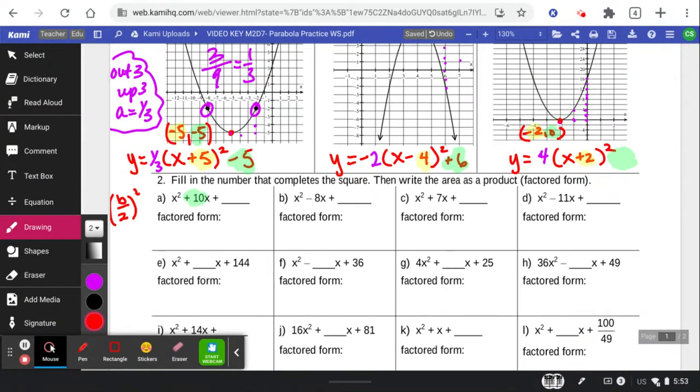So we take the 10. Half of 10 is 5. 5 squared. You got it. Half of negative 8 is negative 4. Negative 4 squared is 16.